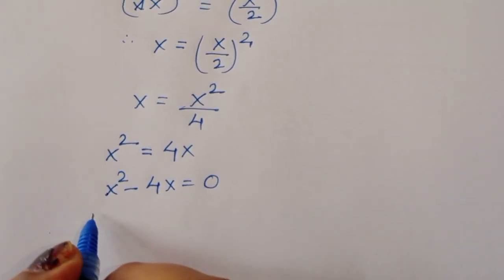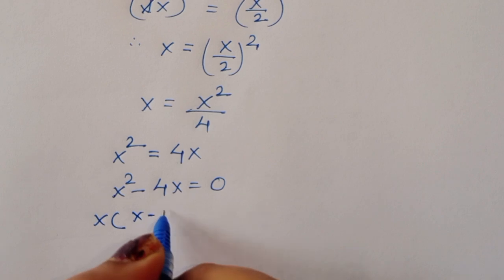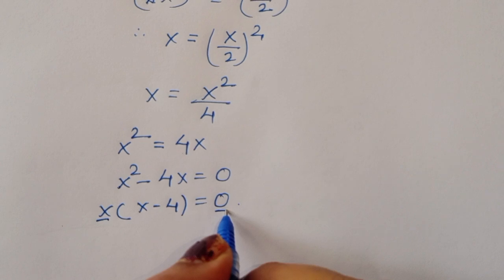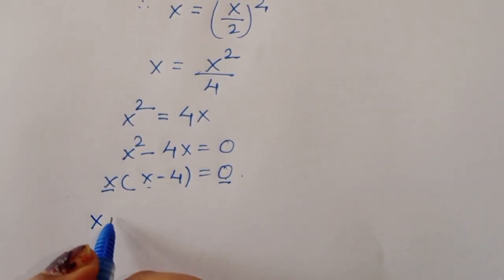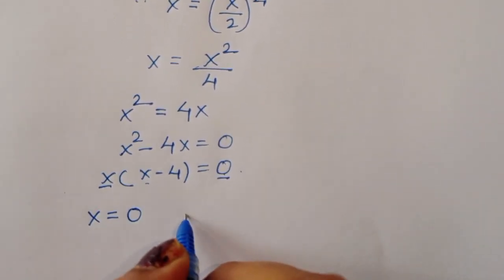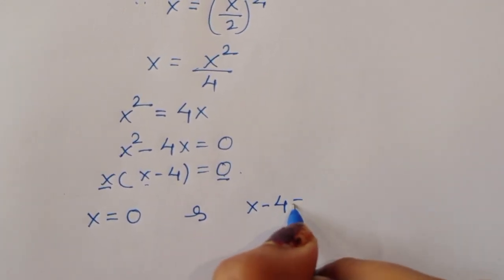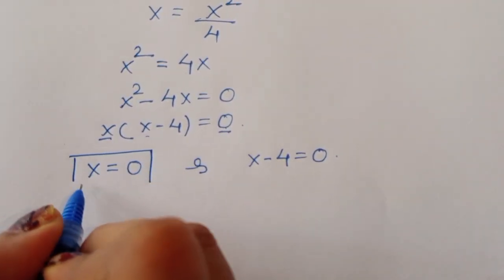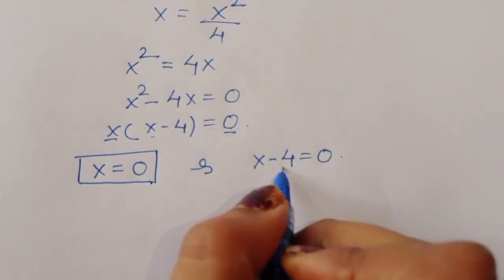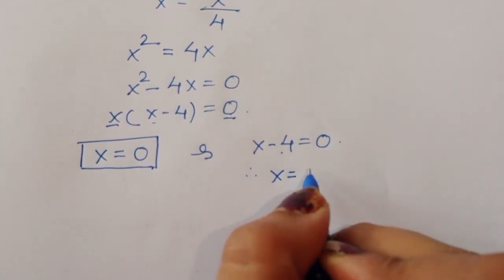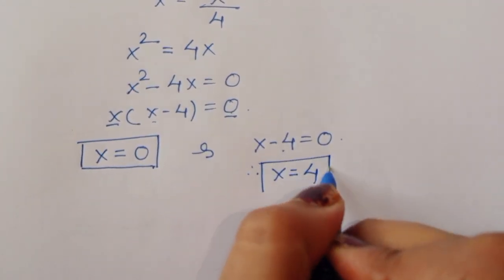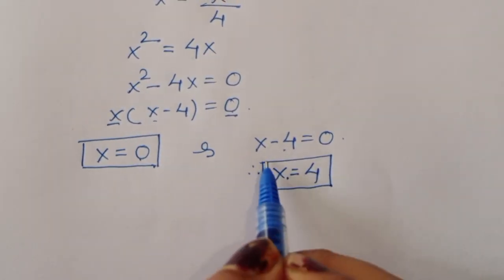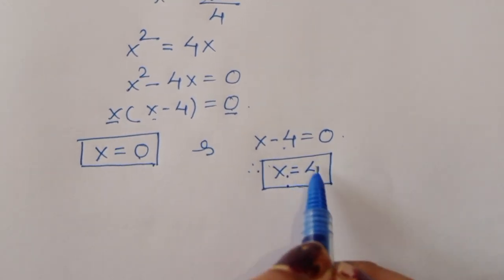Taking x common: x times (x minus 4) equals 0. So the first solution is x is equal to 0, and from x minus 4 equals 0, we get x is equal to 4. We got two values: x equals 0 and x equals 4. Now let's verify for x equals 4.